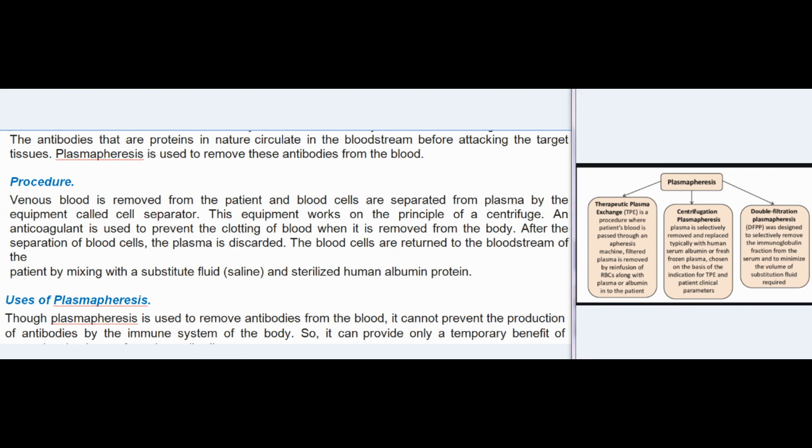Procedure: Venous blood is removed from the patient and blood cells are separated from plasma by a cell separator, which works on the principle of a centrifuge. An anticoagulant is used to prevent clotting. After separation, the plasma is discarded and blood cells are returned to the bloodstream mixed with substitute fluid — saline and sterilized human albumin protein.